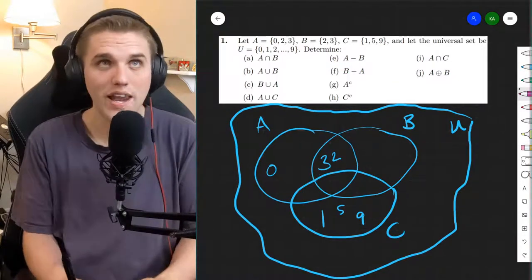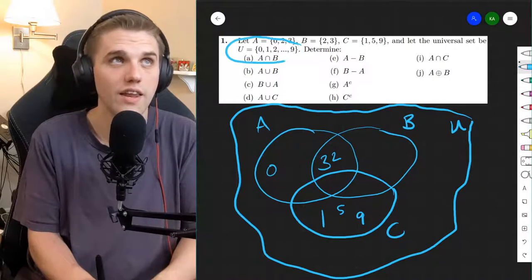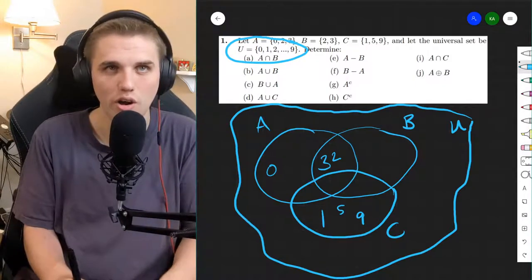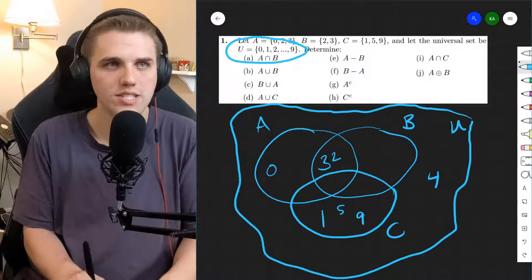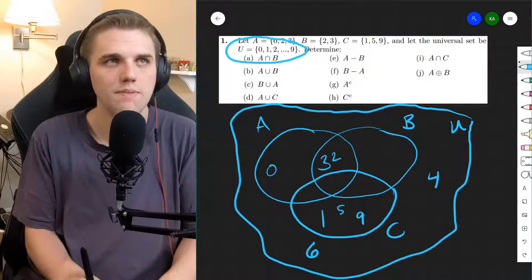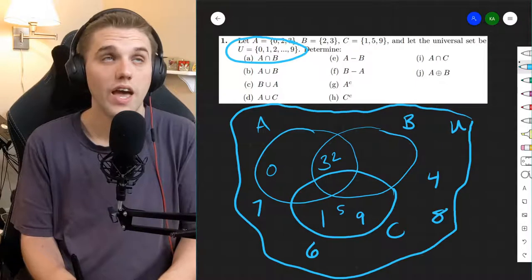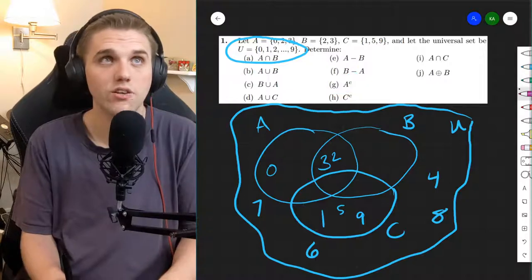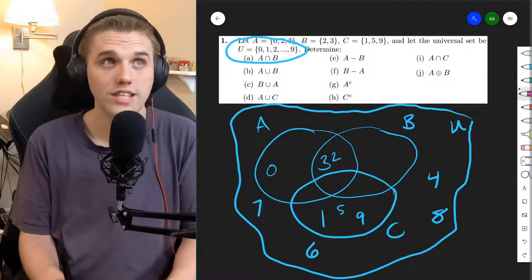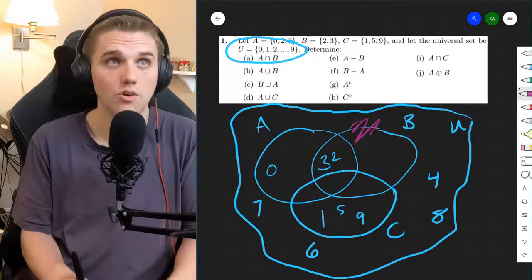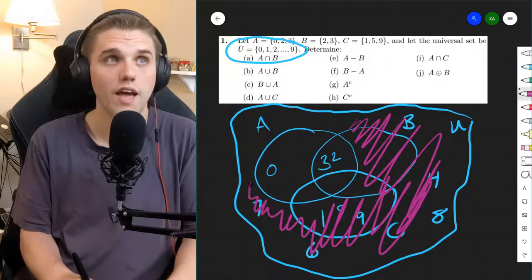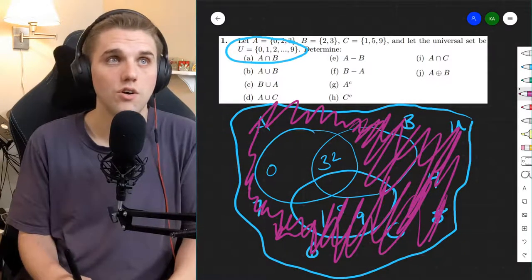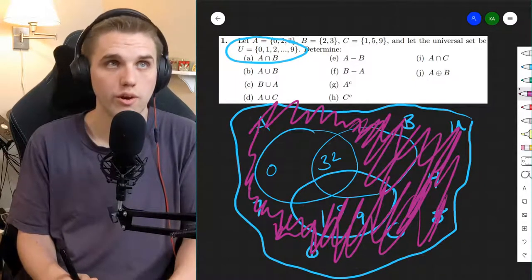Now you may have noticed by now that I haven't written in U yet. There are elements in the universe that haven't been described yet. For example, where is 4? Well, 4 is outside here. Where about 6 and 7 and 8? Same thing. They're all outside. And that'll allow us to determine a complement. A complement is literally everything in the universe that's not in A. So all of this stuff, everything that's not A. And so that includes everything but 0, 3, and 2.